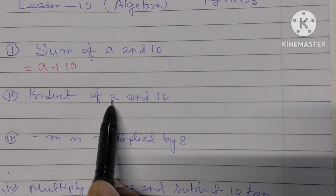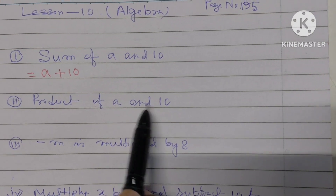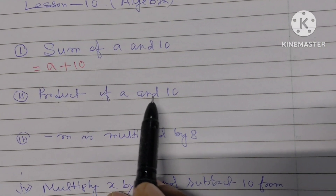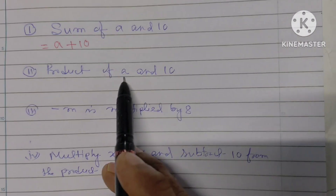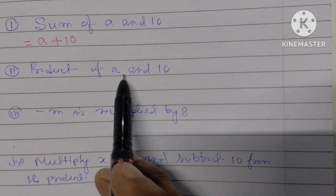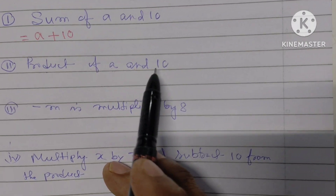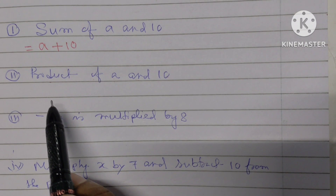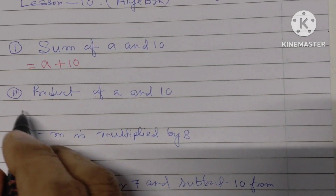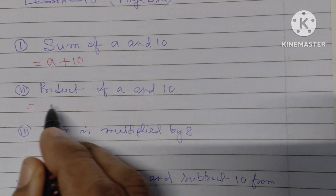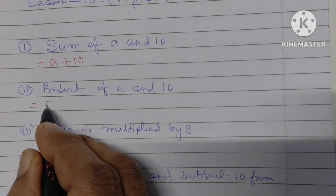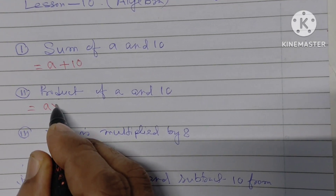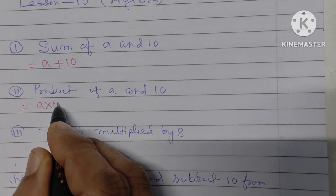Next one: product of a and 10. Product means multiply, so product of a and 10 means a into 10, that is a times 10.